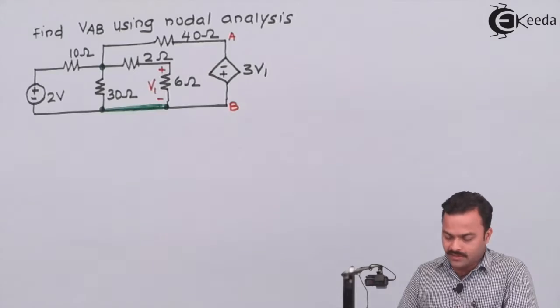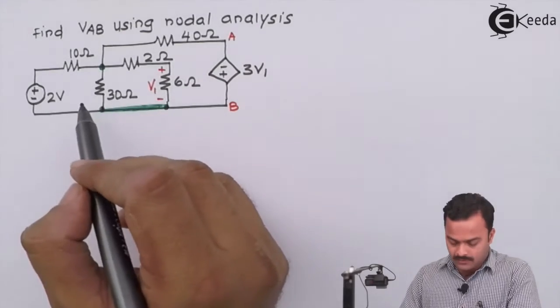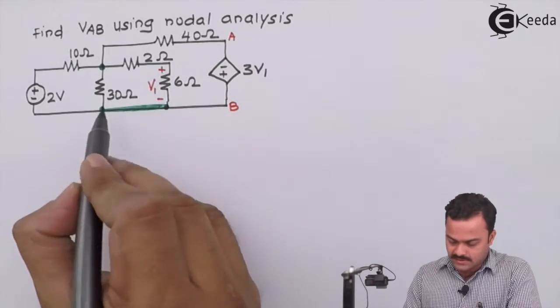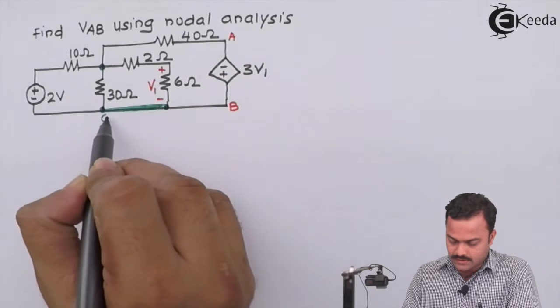Hence, I can say this entire thing is one node. So in all, in the circuit, we are having two nodes. Out of that, one we will take as a reference. So it is always better to take this as a reference.